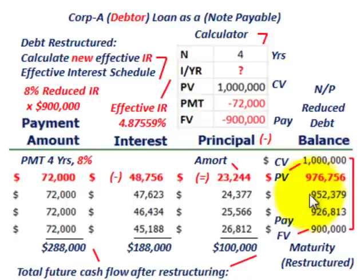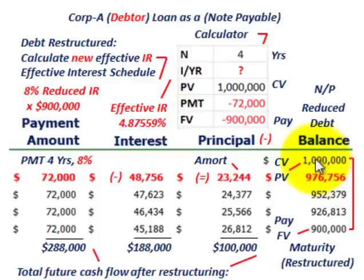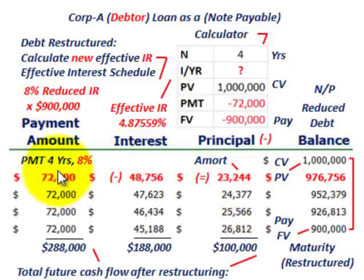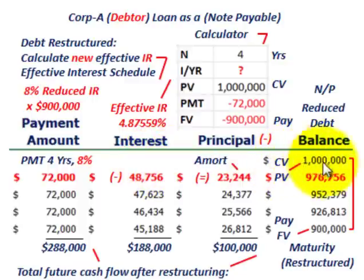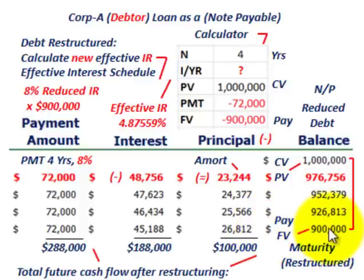Originally Corporation A was responsible for $1,000,000, but now they're only going to have to pay $900,000. So we start with the beginning balance — the carrying value of the original note — and amortize it down to what will actually be paid at maturity. Our cash interest payment: originally at 12% per year, now revised to 8%. We pay 8% on the new amount of $900,000, so interest payments are $72,000 per year.